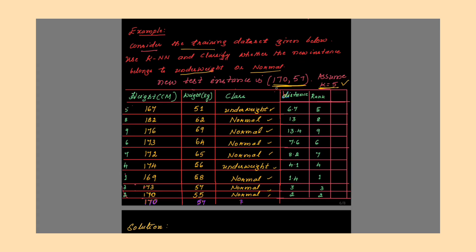First, see what is given in the example. One column has height, another column has weight, and the third column is the target label — the class. The last two columns, distance and rank, are part of the answer. The first three columns are given in the question. So these are the training data. If height is 167 and weight is 51, the algorithm is trained that it belongs to underweight.